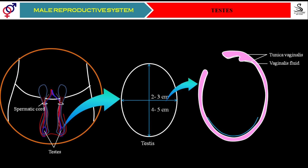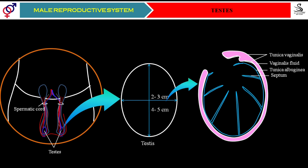Inside the tunica vaginalis layer we find one more layer called tunica albuginea. This layer plays a very important role because it is intercepted, forming septa, and due to the formation of these septa the testes gets divided into a number of compartments. You can see here — this is one compartment, this is another compartment, this is one more compartment — like that many compartments are there.